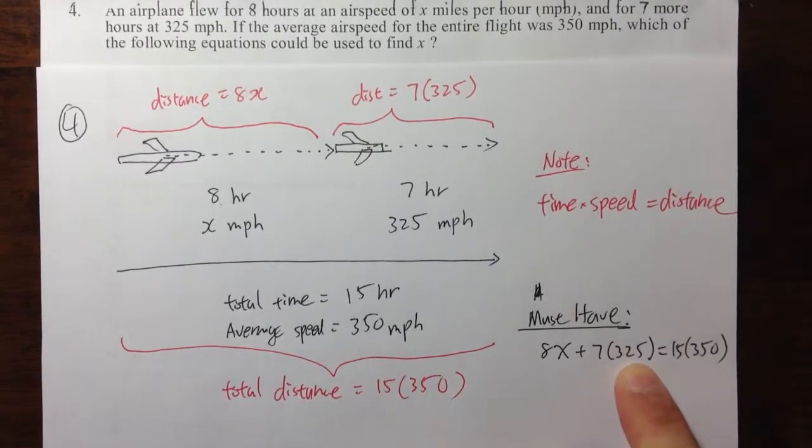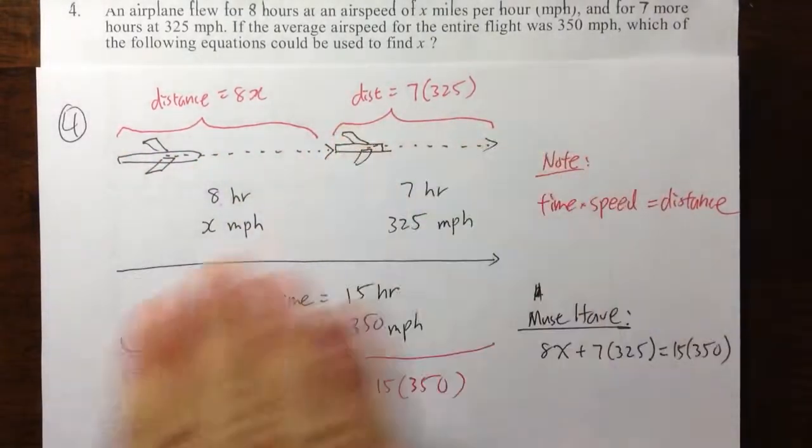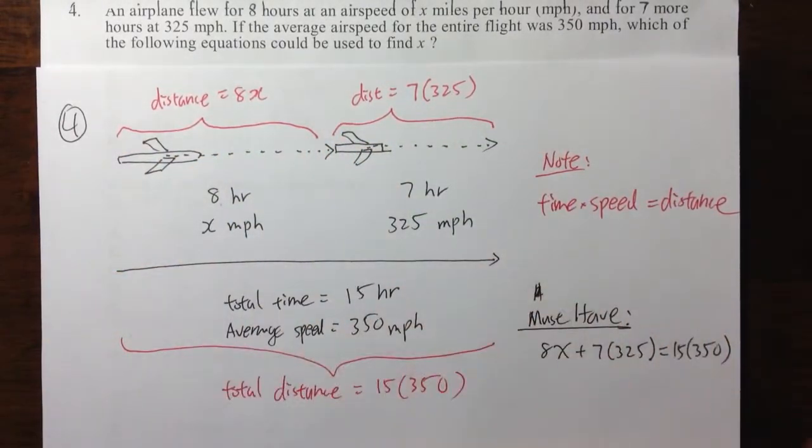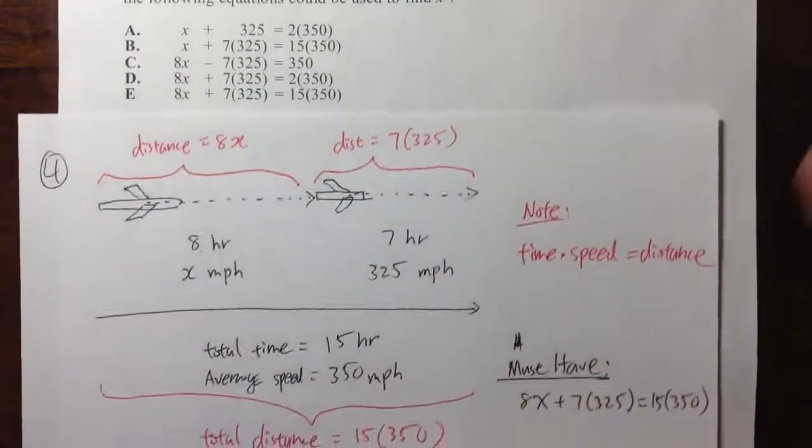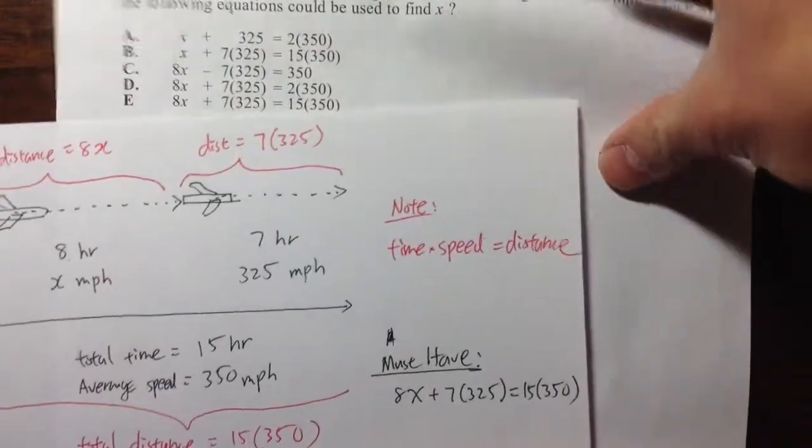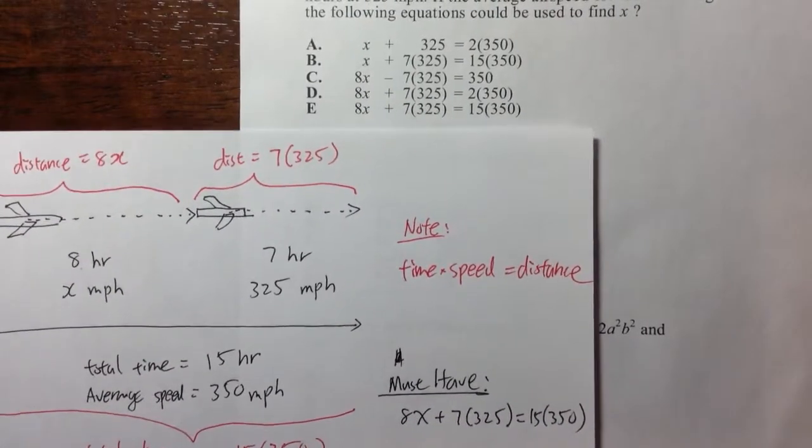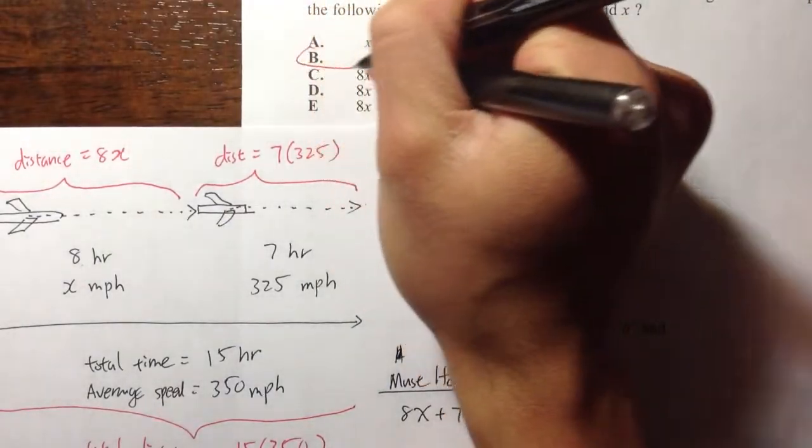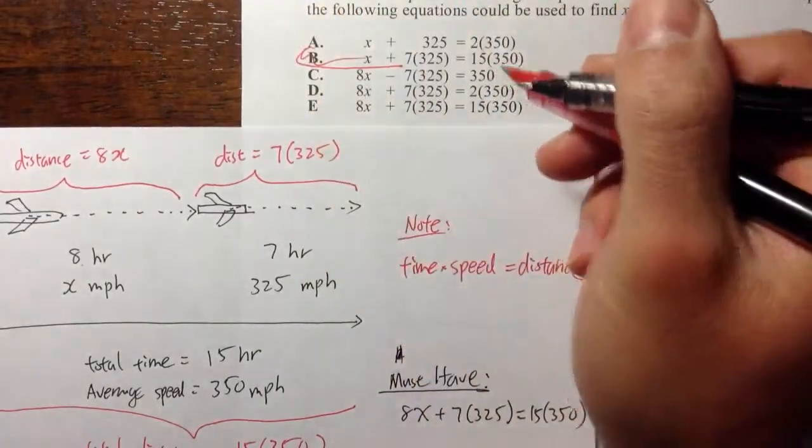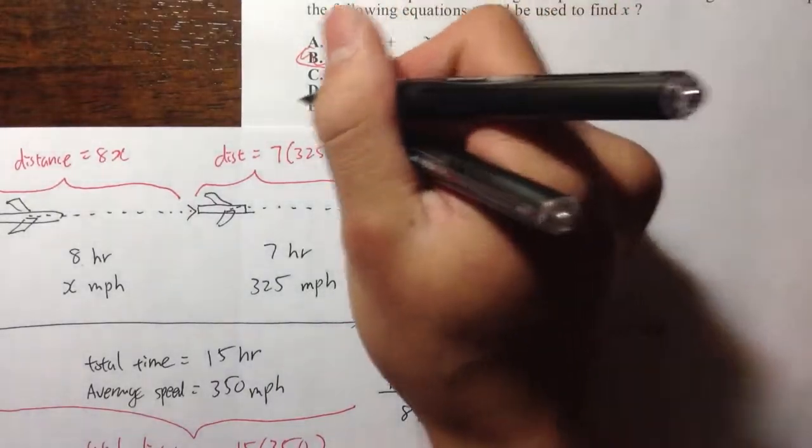Let me see, I have 8x plus 7 times 325, which is answer choice B. Oops, no, no, no. 8x plus 7 times is this one, answer choice E.